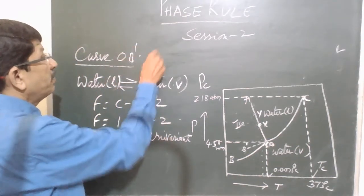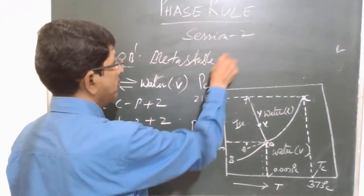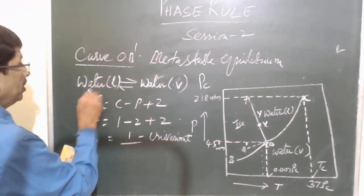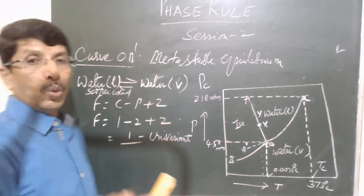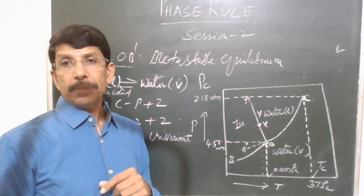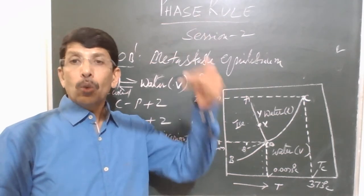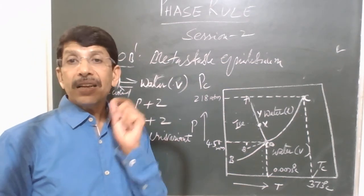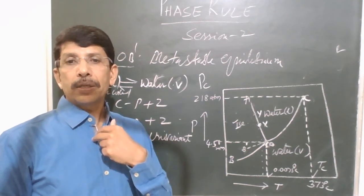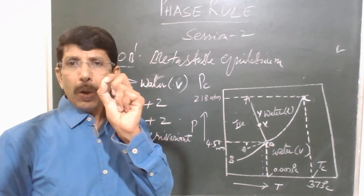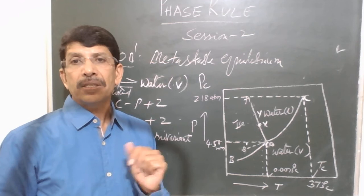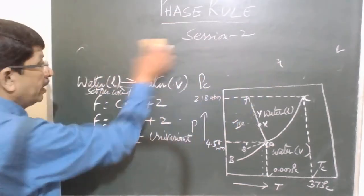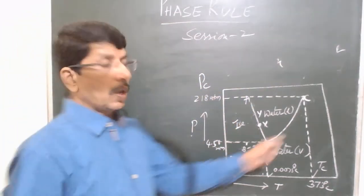Curve OB' is a metastable equilibrium curve along which supercooled water — liquid water below 0°C at atmospheric pressure — is in equilibrium with water vapor. Supercooled water is a highly unstable state; just by shaking, it abruptly changes into ice, or by adding a small piece of ice it entirely converts to ice. There are again two phases, so the system is monovariant along this metastable curve.